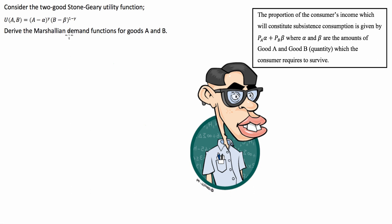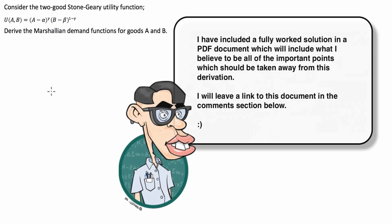So let's get started. We're going to need to set up a fairly standard utility maximization problem where we have to maximize this Stone-Geary utility function given a particular income constraint. But before we do that, what I'm going to do is rewrite this to make it easier for me to do the differentials later on. Rather than writing the utility function in terms of A and B like this, I'm going to take the natural log of each side.